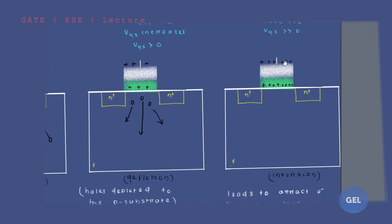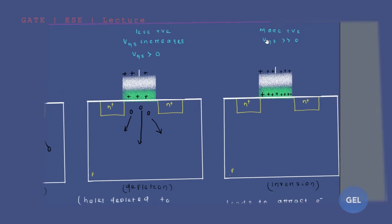Now if I am applying a very, very large amount of positive VGS — I want your 100% attention here — this is one of the most important analyses of the working of MOSFET. If I apply a very large value of VGS, there will be a positive charge influence here. The positivity influence increases, and positive attracts electron. So electrons get attracted to this region.